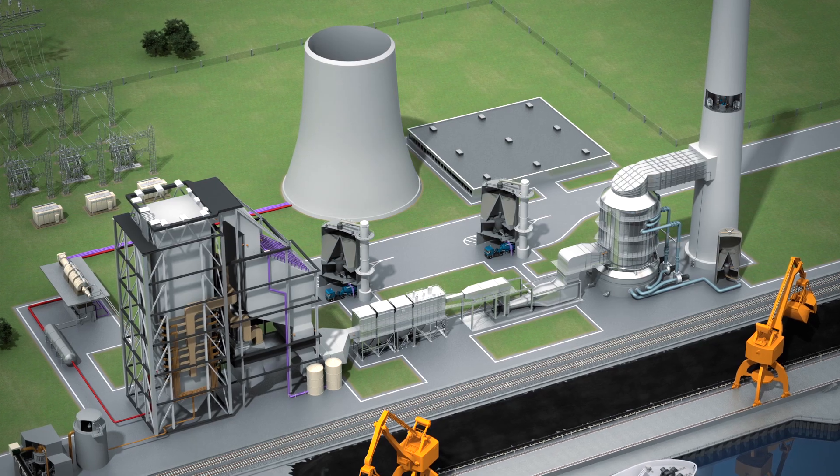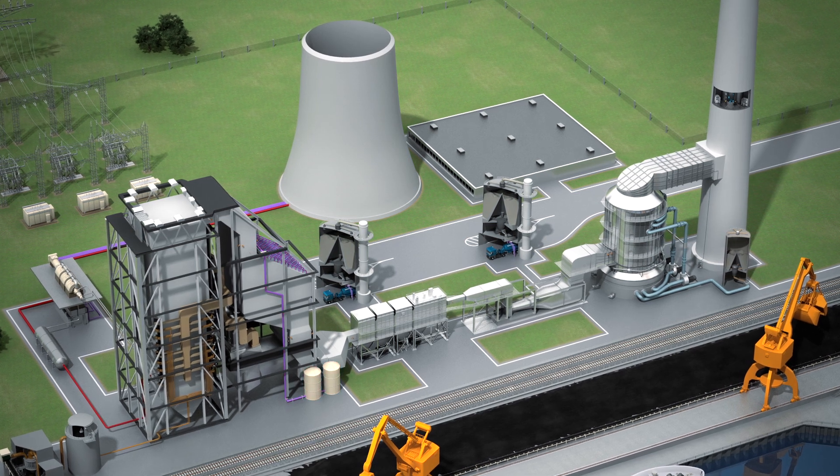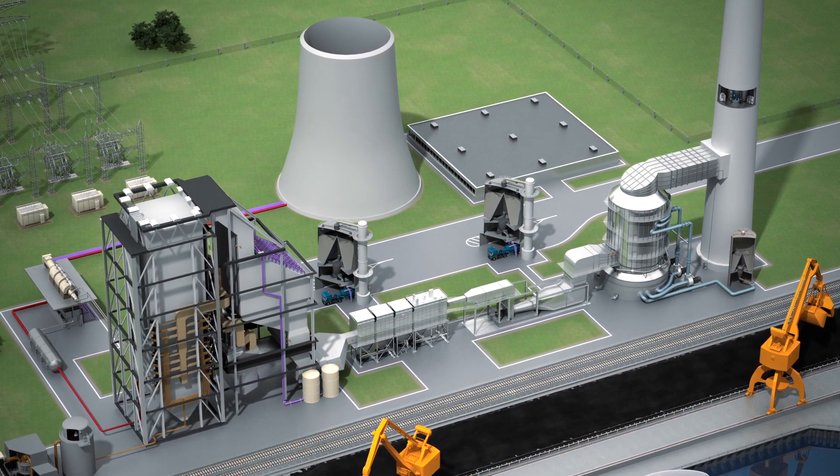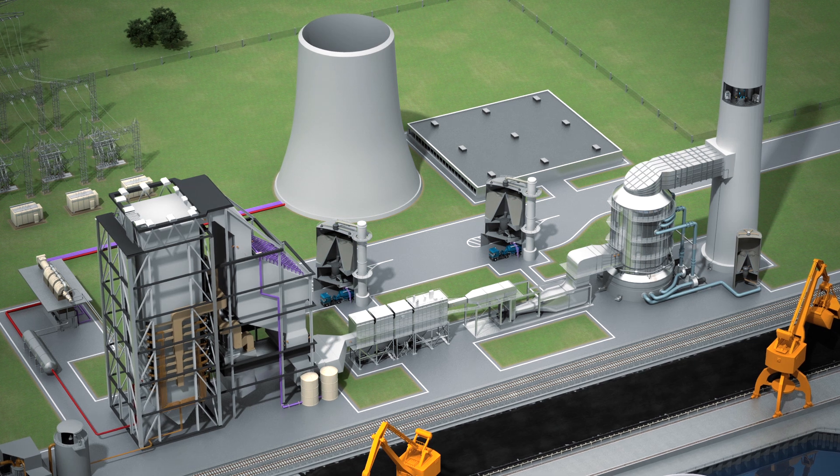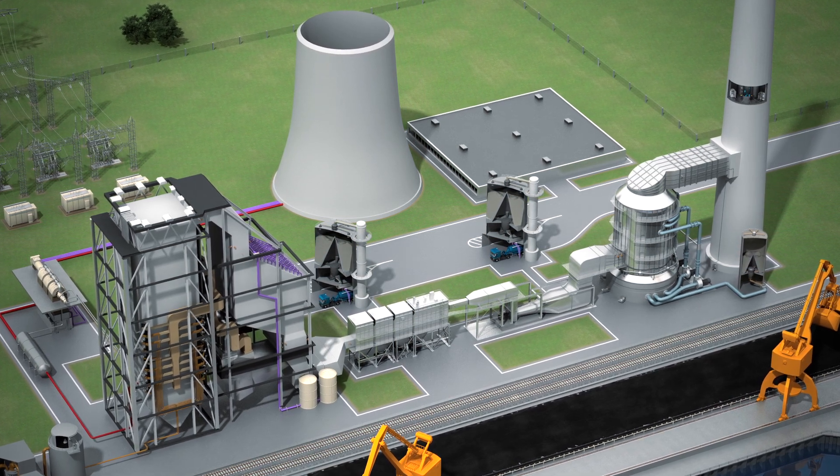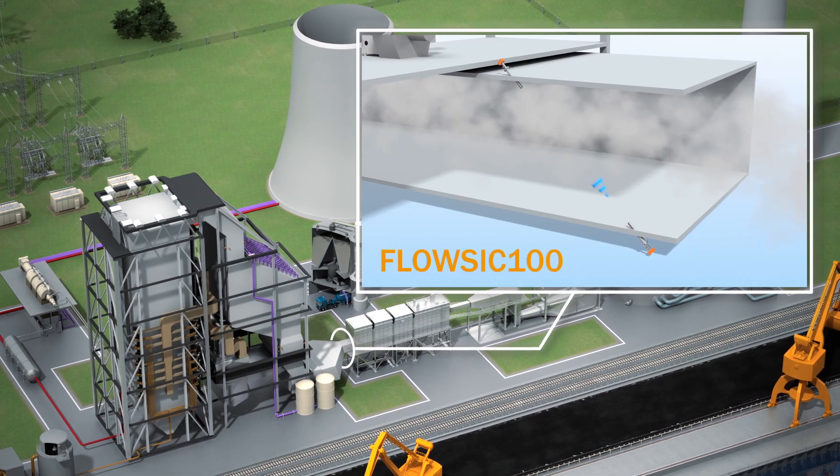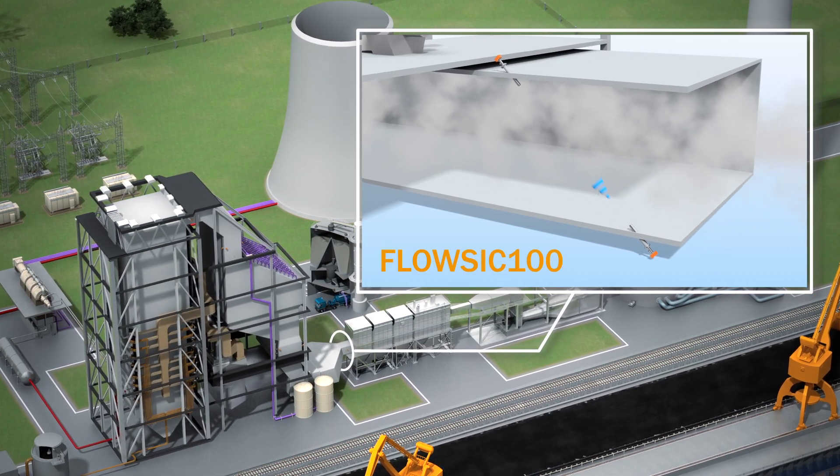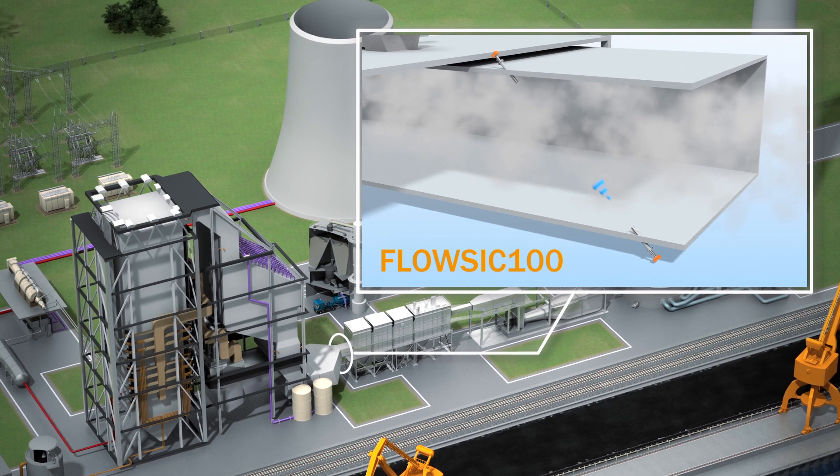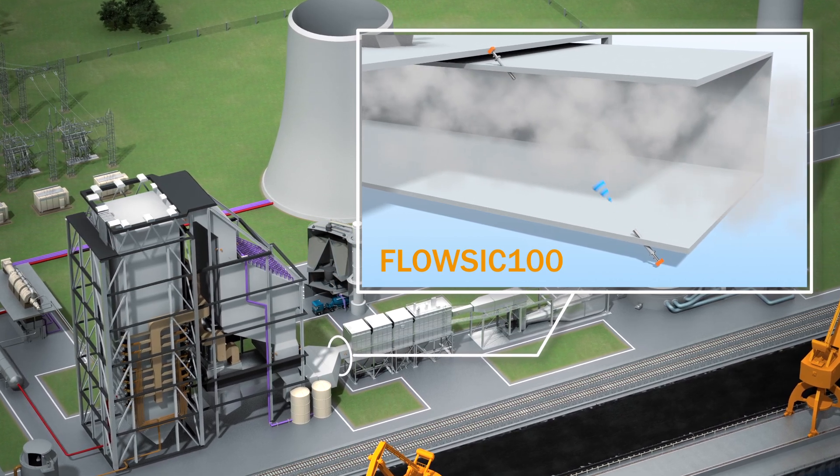The measurement result obtained enables the injection of ammonia to be precisely regulated. In addition, volumetric flow measurement provides the information to calculate mass flow. The volume flow is continuously determined across the complete process duct by means of the flow-sick 100-PHS ultrasonic meter.